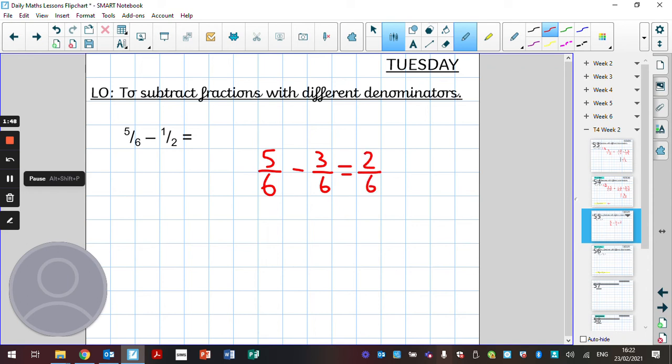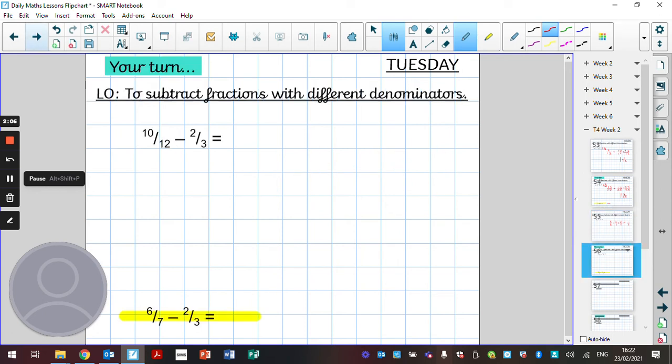The denominator stays the same as six, so two sixths. Or you may have noticed that we could simplify that further because two is a multiple of six, so that could be simplified to one third. Well done if you've managed to do that.